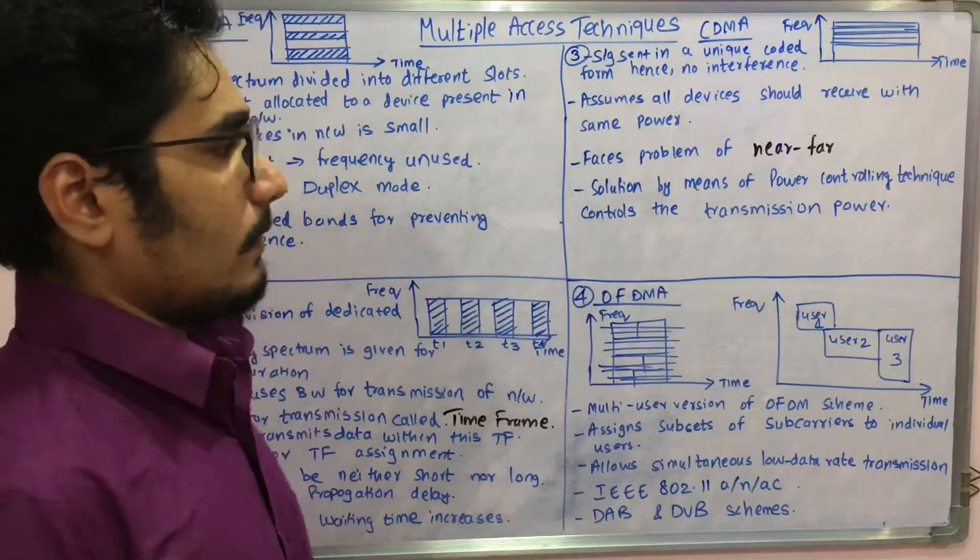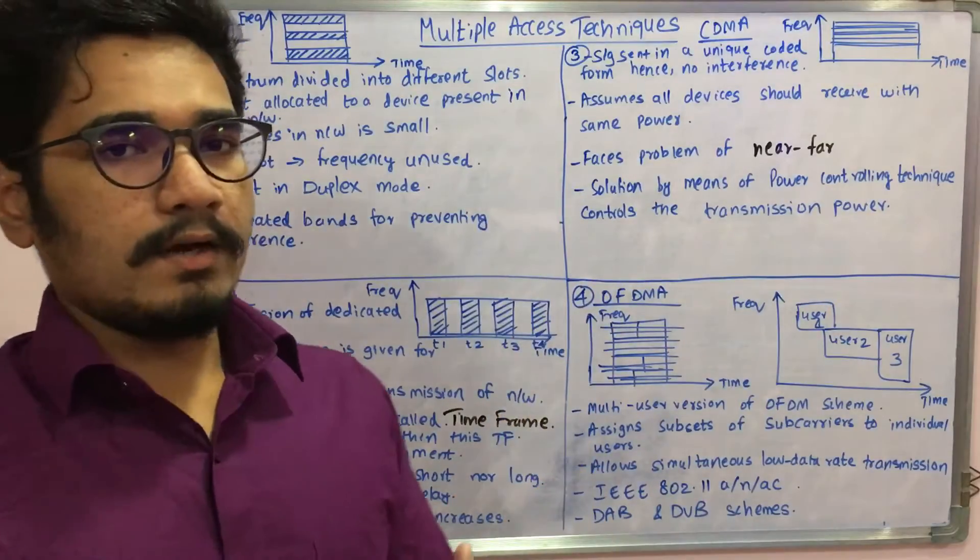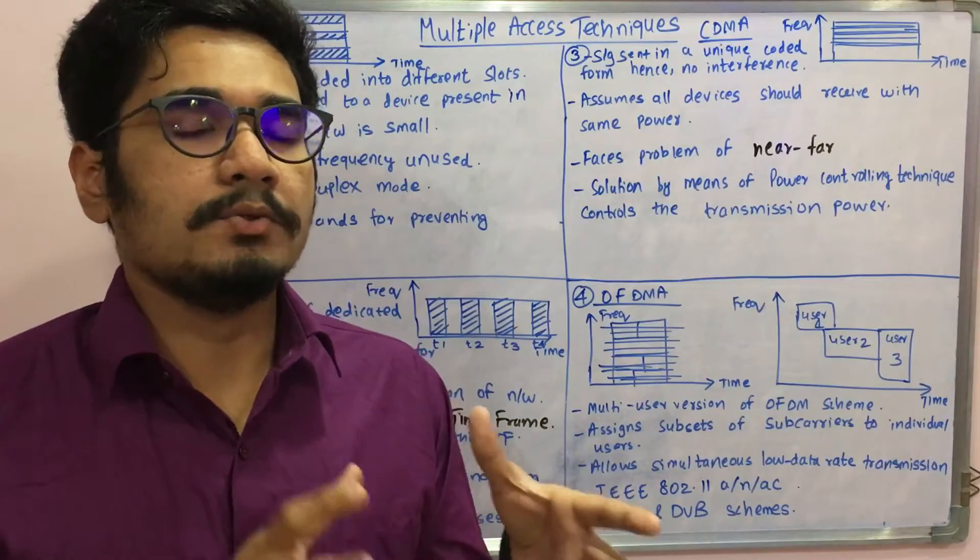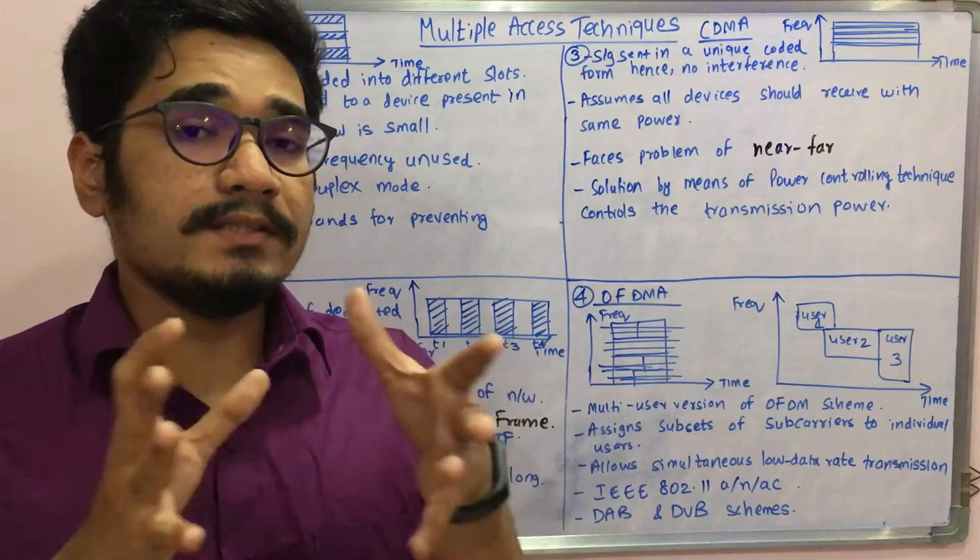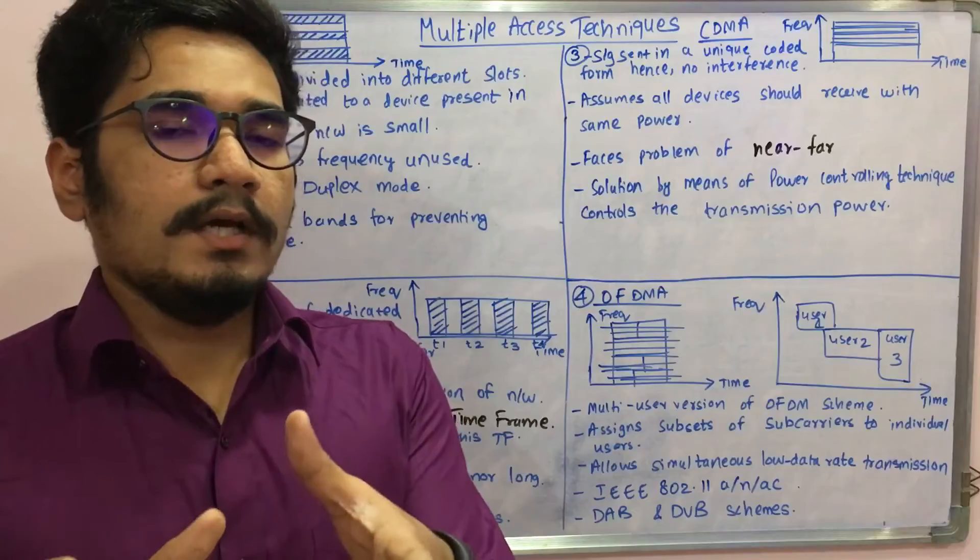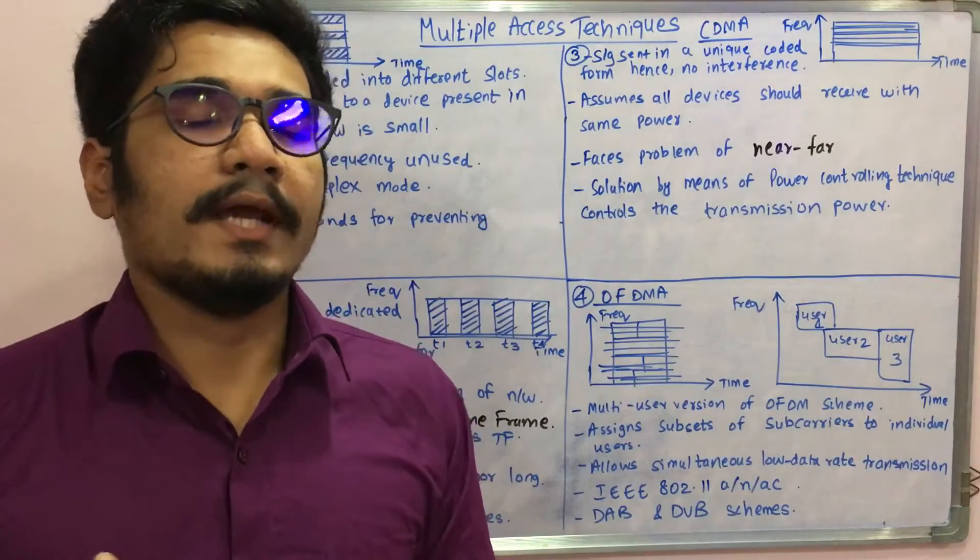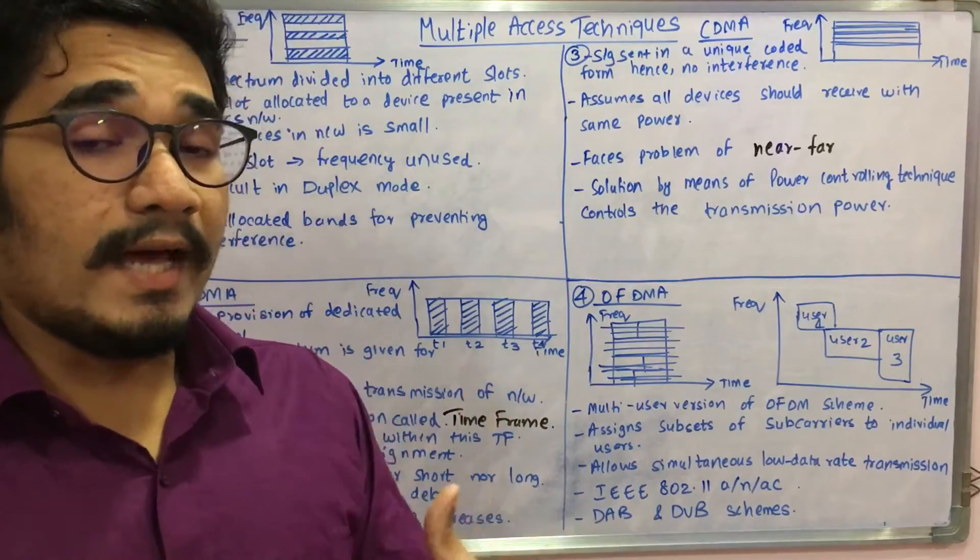This technique assumes that all devices should receive with the same power. Whenever at starting point, like you have for example say 10 devices, so 10 devices should transmit the data with the same power and with the same speed, and so it should reach the destination and should receive back and give the acknowledgement to the end system.